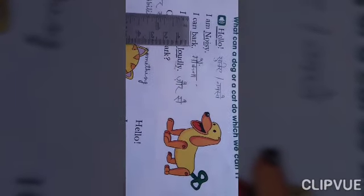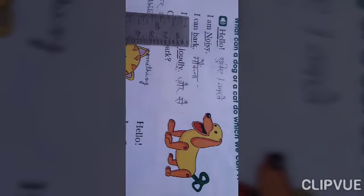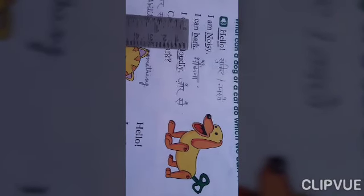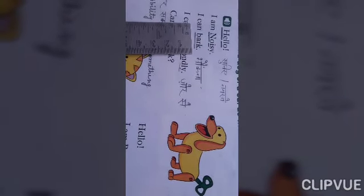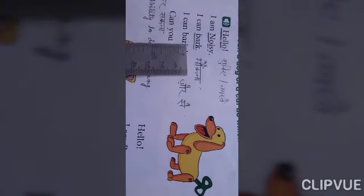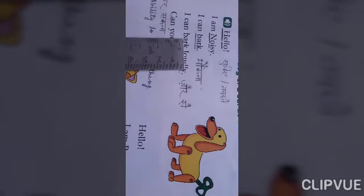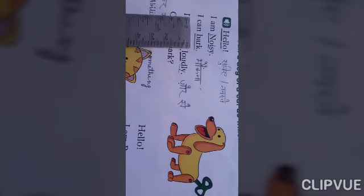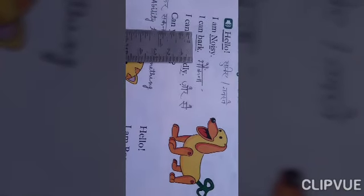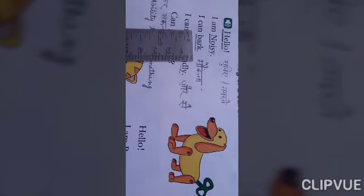And the next word is Can. Can means, Karsakna, the ability to do something, Kuch karne ki yogyata. And the next word is Bark. Bark means, Bhonkna. Bark is the sound of dog.